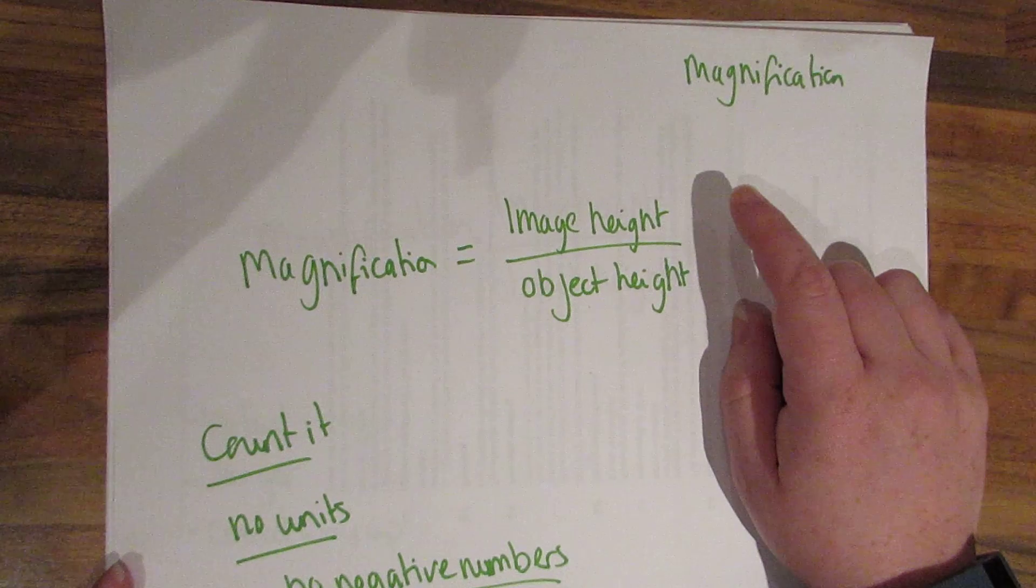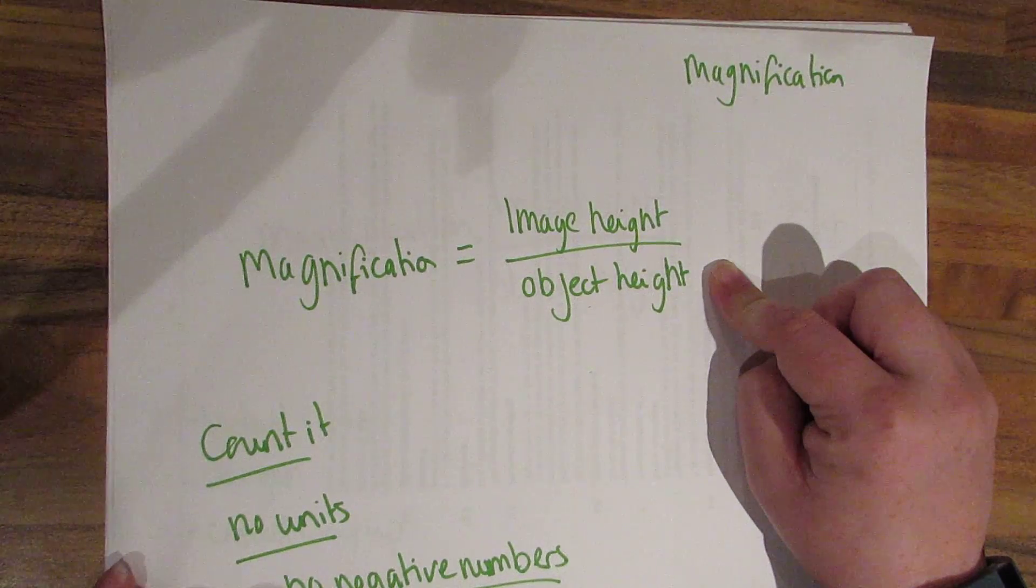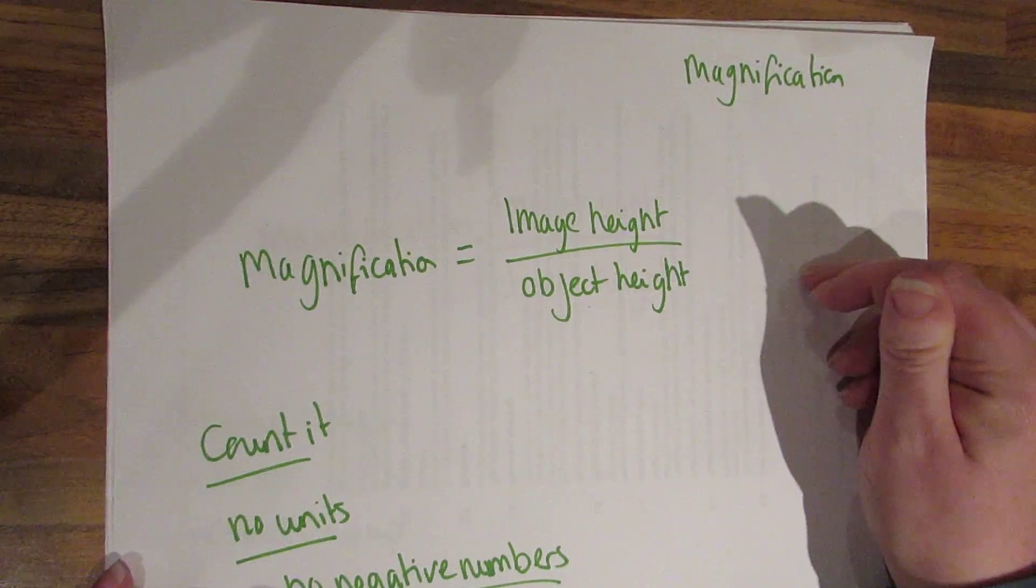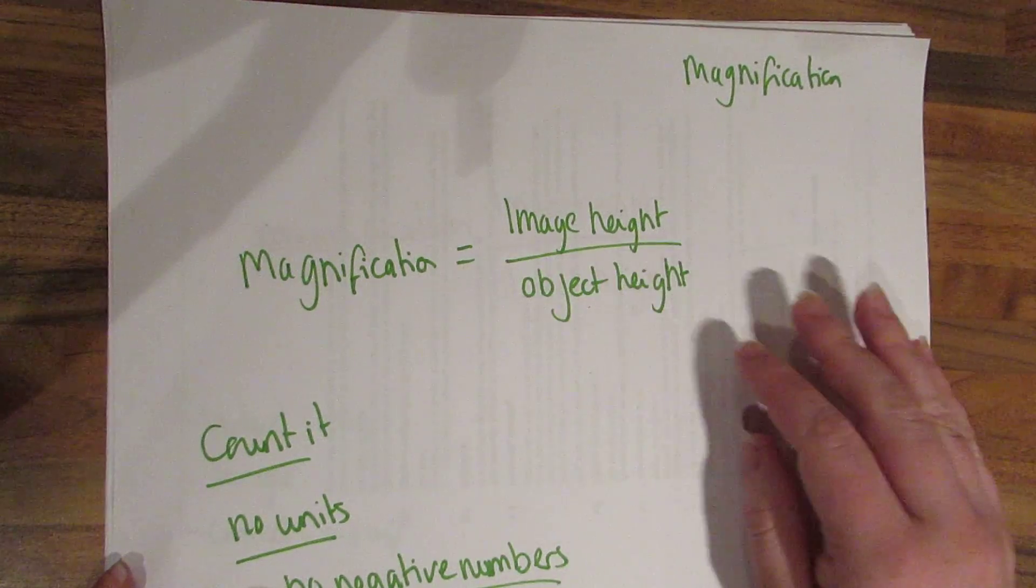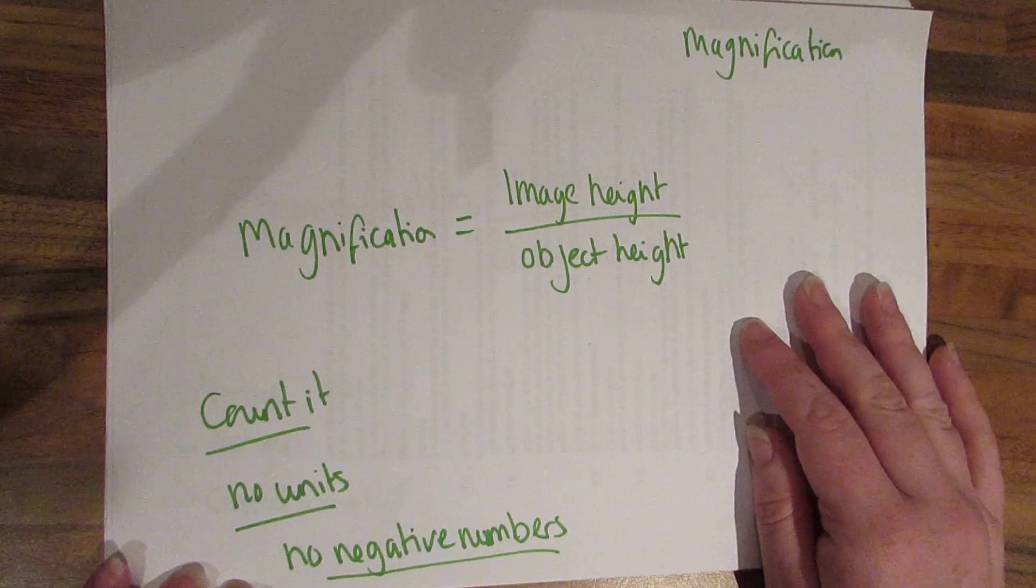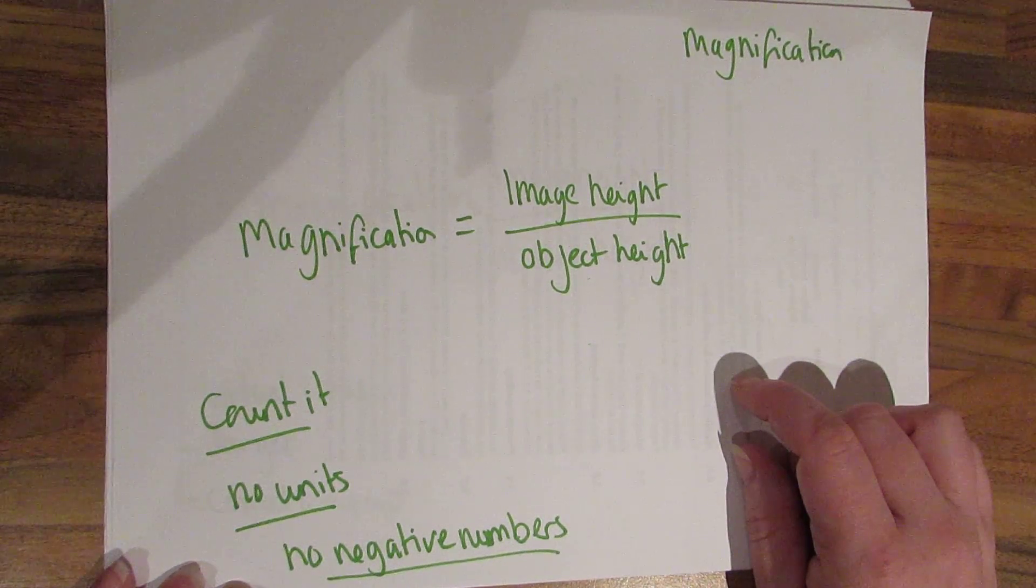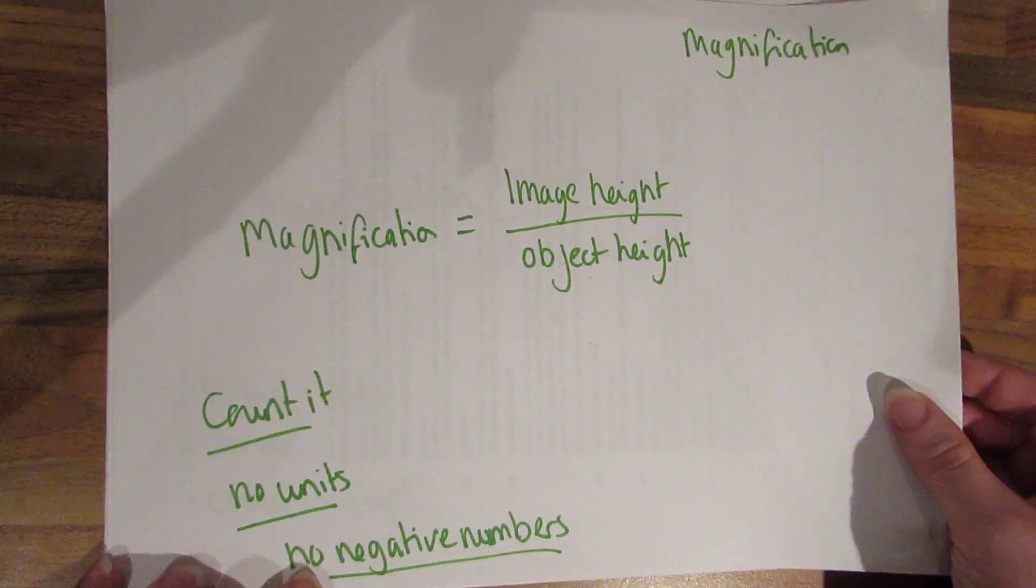Magnification. Magnification is worked out by dividing image height by the object height. Now there are a few ways they can do this, they could give you some squares which you just count. There are no units for this so you don't need to worry about it and you don't need to use negative numbers. So it's probably going to be counting the number of squares or you can use a ruler to measure it.